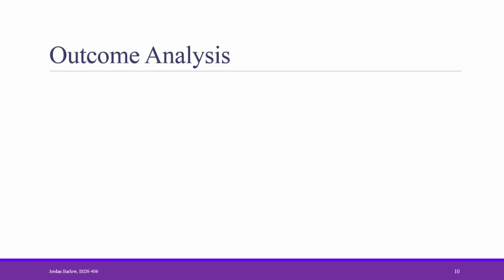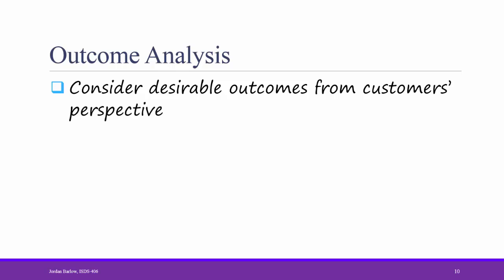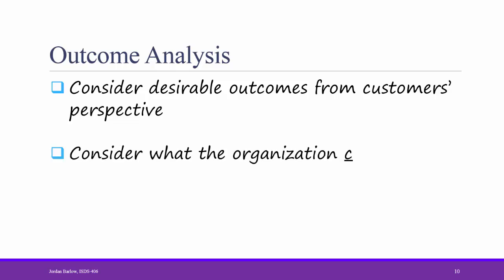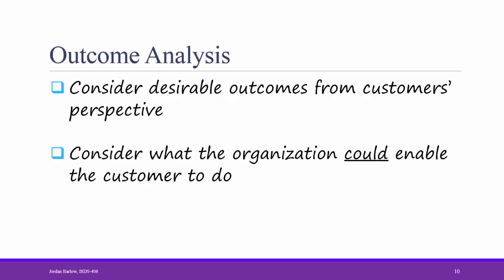Another strategy is outcome analysis. In this strategy, the analyst considers desirable outcomes from the customer's perspective. For example, the bank might say that a favorable outcome would be approval of the loan. However, customers might also consider how fast the loan is approved in determining whether they had a good outcome with the bank. In other words, the analyst helps the organization to see alternative outcomes that might be important to the customer that they might not have previously considered.